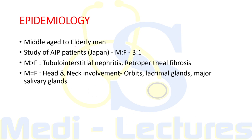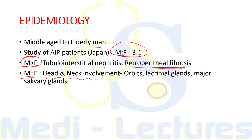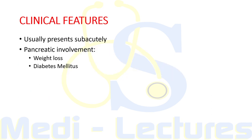A typical patient with this condition is a middle-aged to elderly man — in contrast to classic autoimmune diseases which are most commonly seen in females. A study in Japan on autoimmune pancreatitis patients found a male-to-female ratio of 3:1. Similarly, in tubular interstitial nephritis and retroperitoneal fibrosis, males predominate. However, head and neck involvement — orbits, lacrimal glands, and major salivary glands — shows equal incidence in males and females.